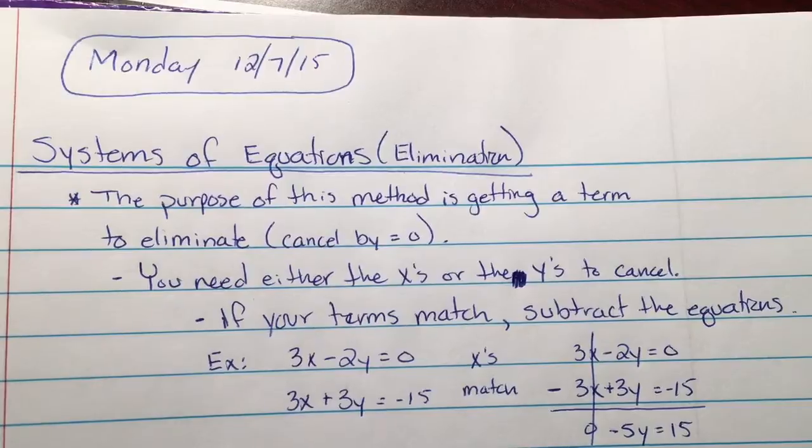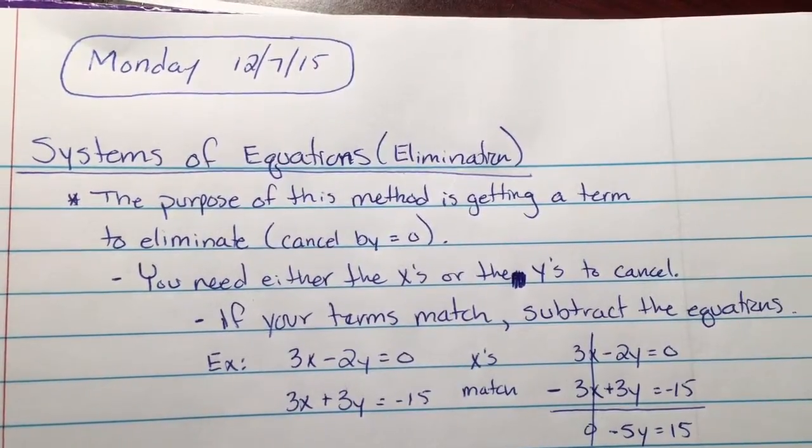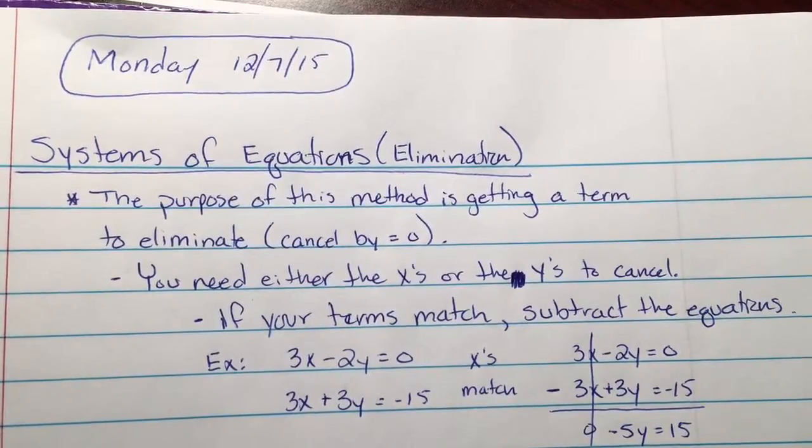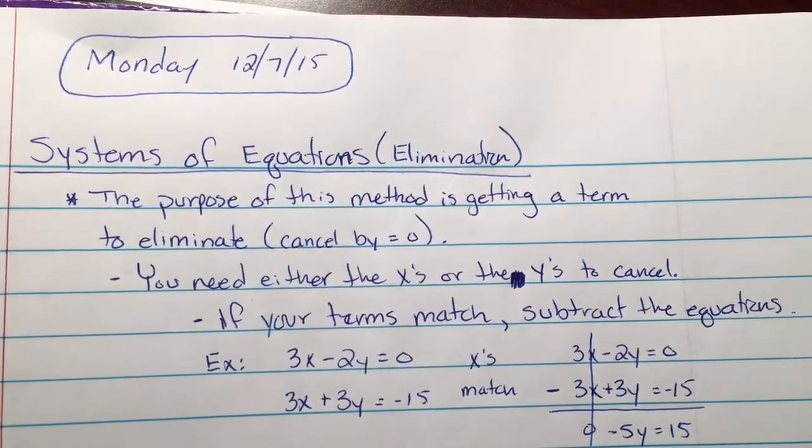The purpose of this method is to get something to eliminate, hence the title elimination. Eliminate, when we say eliminate, we just simply mean getting something to cancel out by equaling zero.